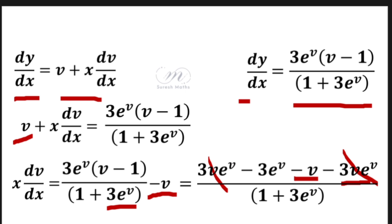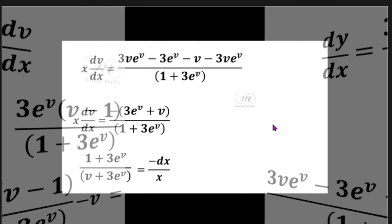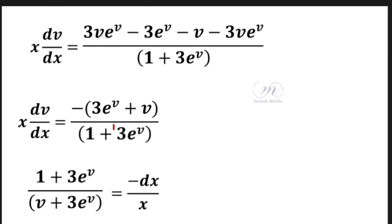After cancellation, minus is common. The minus and minus signs cancel. Now minus is common, giving 3e^v plus v in the numerator, divided by 1 plus 3e^v in the denominator.